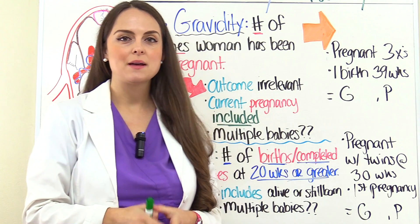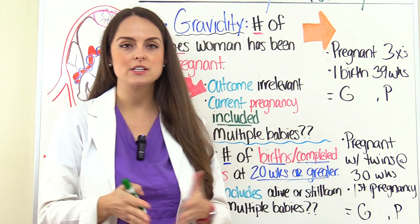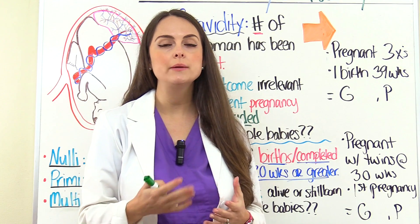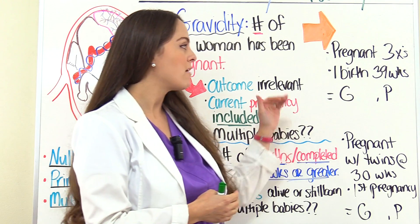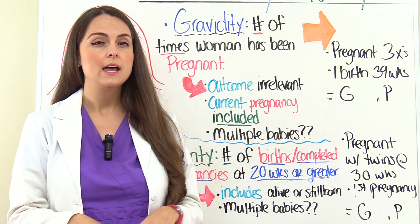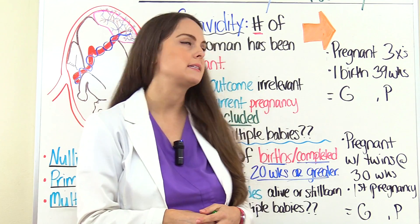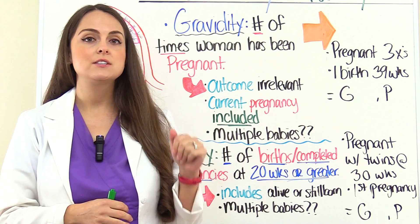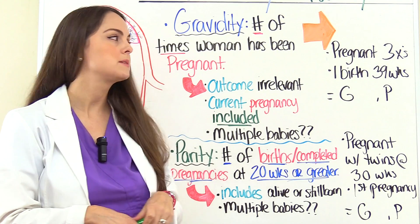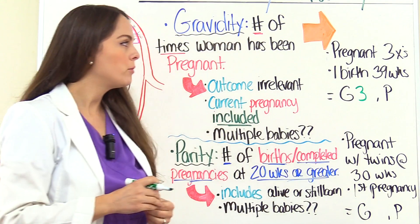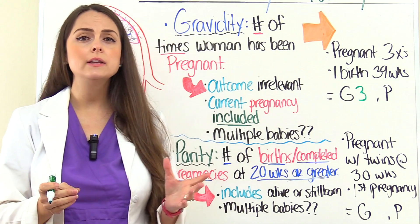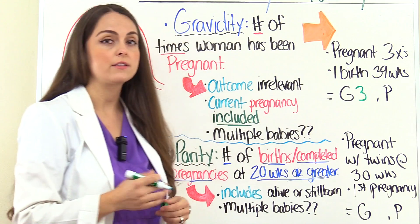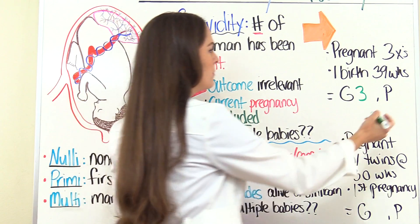Now let's apply what we've learned to some scenarios. This patient tells us she has been pregnant three times, she's not currently pregnant, and out of those three pregnancies, only one did she give birth at — completing the pregnancy at 39 weeks. The other two were less than 20 weeks gestation when those pregnancies completed. So her Gravida would be three, because that's the number of times she has been pregnant. Her Para would be one, because only one pregnancy was completed at 20 weeks or greater.